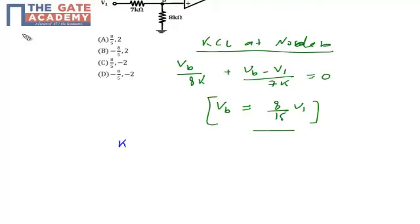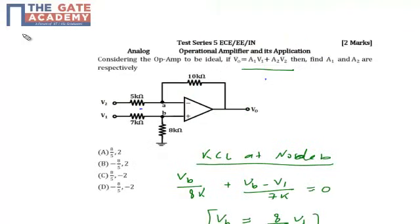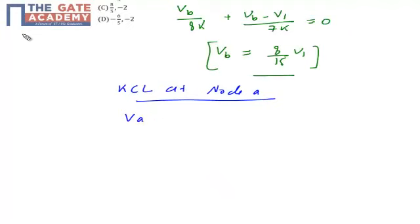Next, apply KCL at node A. The input current of the op-amp is 0, so current goes through the feedback path. VA minus V2 by 5 plus VA minus V0 by 10 equals 0.